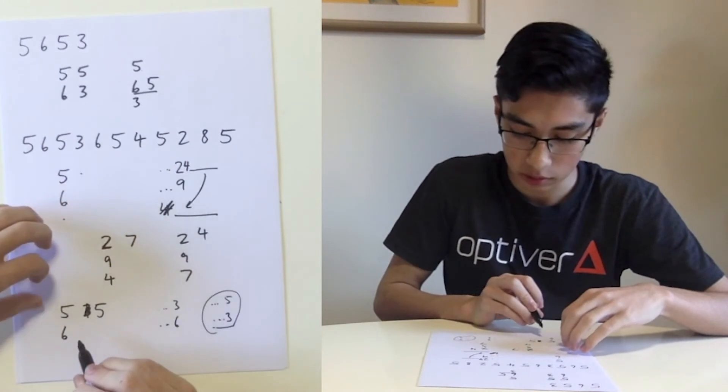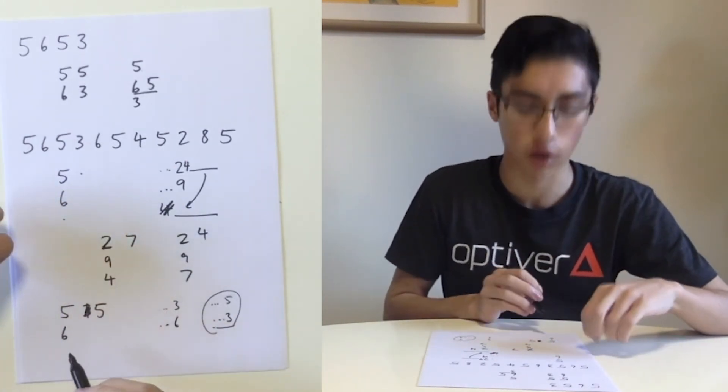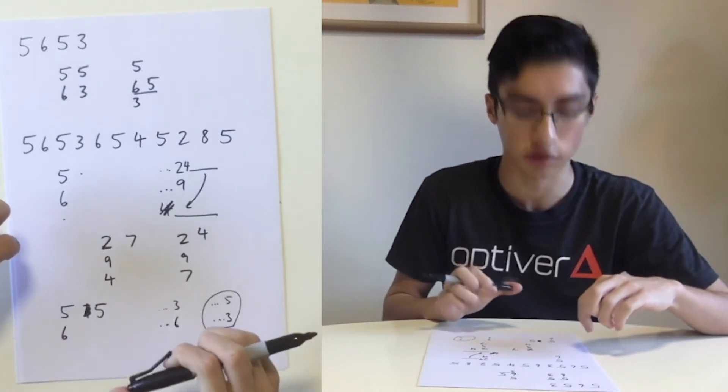So we have reasoned that we should always add a number to the right of the largest number it can be added to, if it can be added to any existing list.